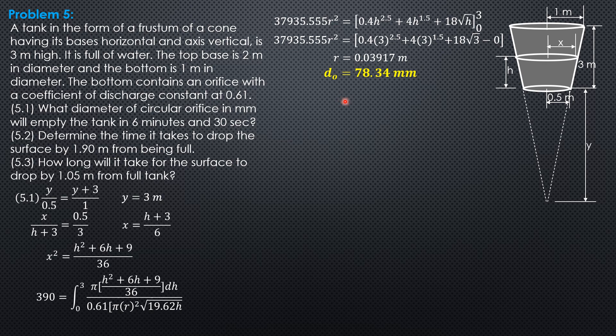Substitute the upper limit which is, so we have 0.4 times 3 to the 2.5 plus 4 times 3 to the 1.5 plus 18 square root of 3 minus 6.70056 times lower limit 0.4 times 1.1 to the 2.5 plus 4 times 1.1 to the 1.5 plus 18 square root of 1.1. So time is equal to 221.1 seconds.